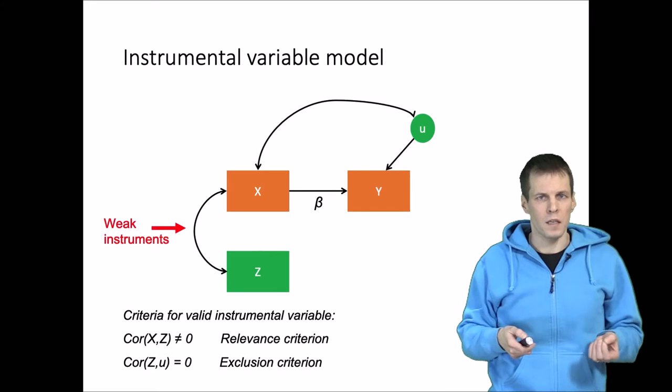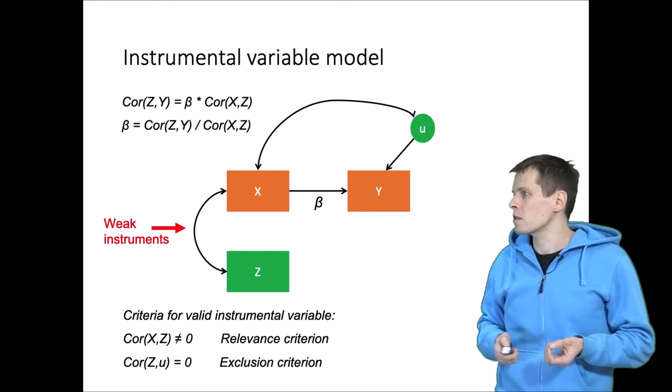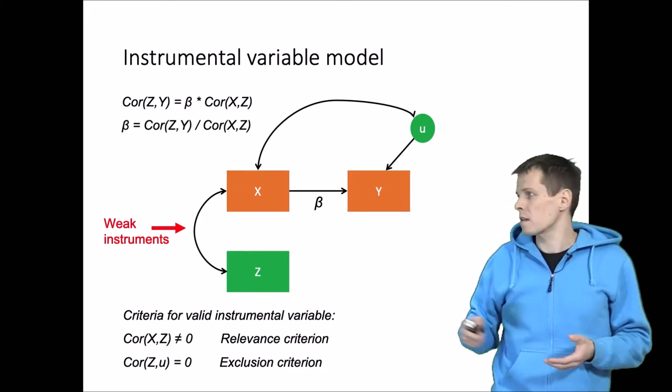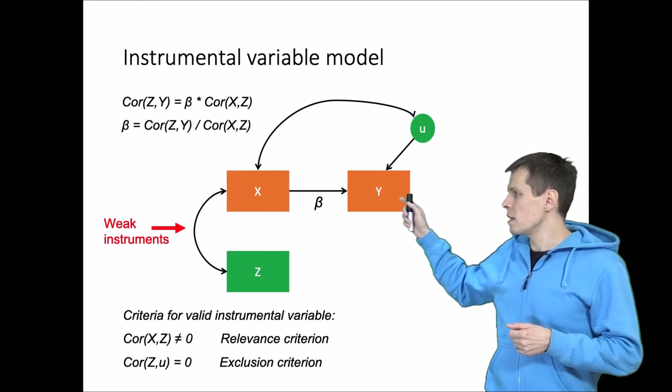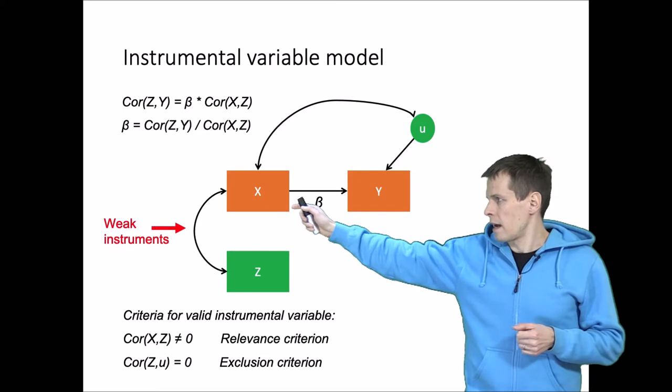To understand why that is the case, let's take a look at the equation for calculating the instrumental variable estimate for beta here. We can see the beta is this correlation between z and y divided by correlation x and z.